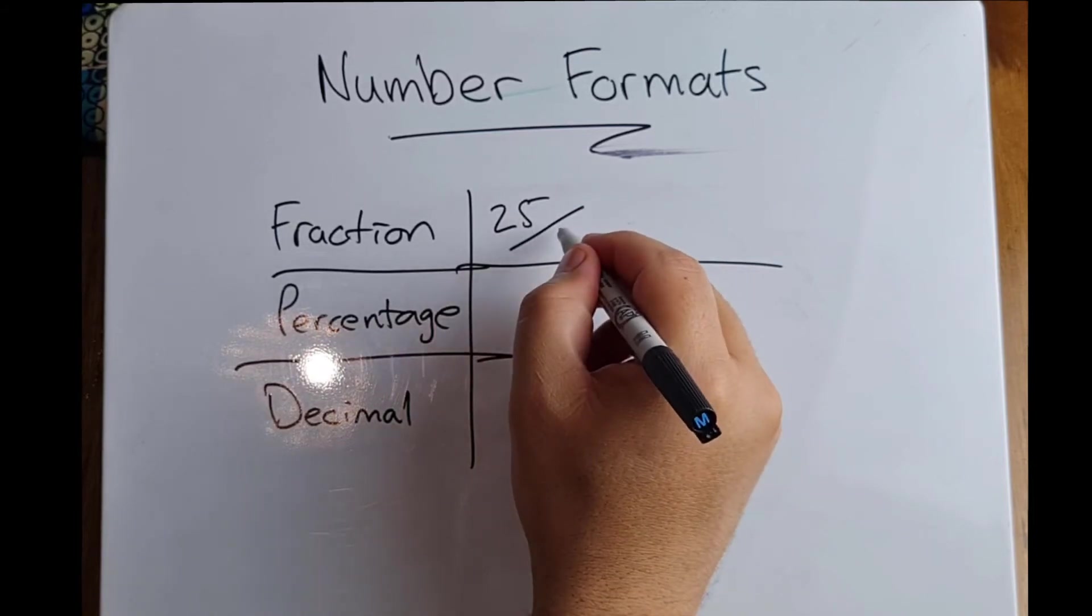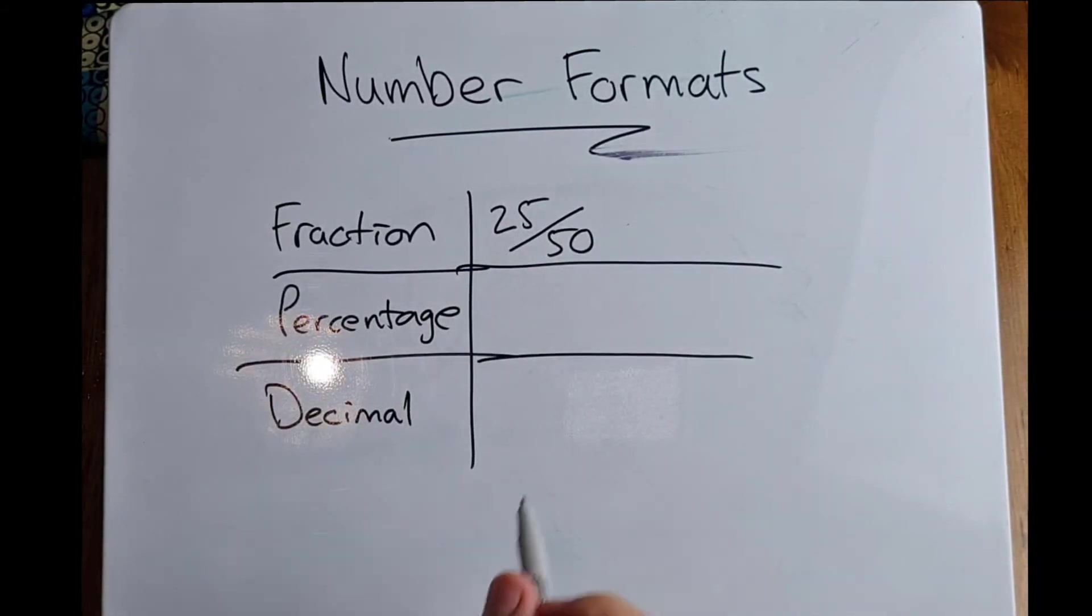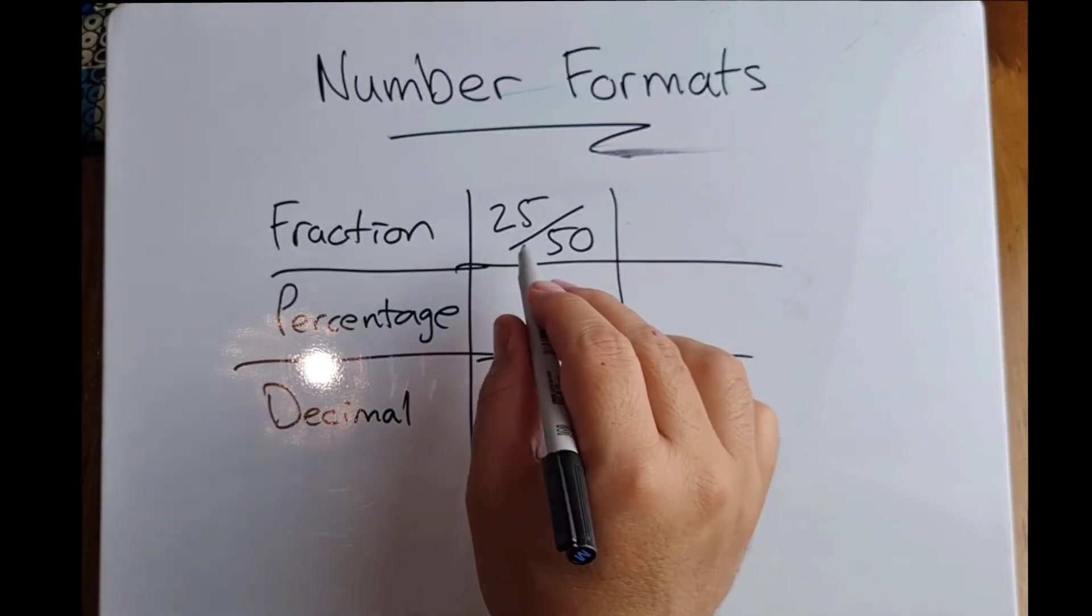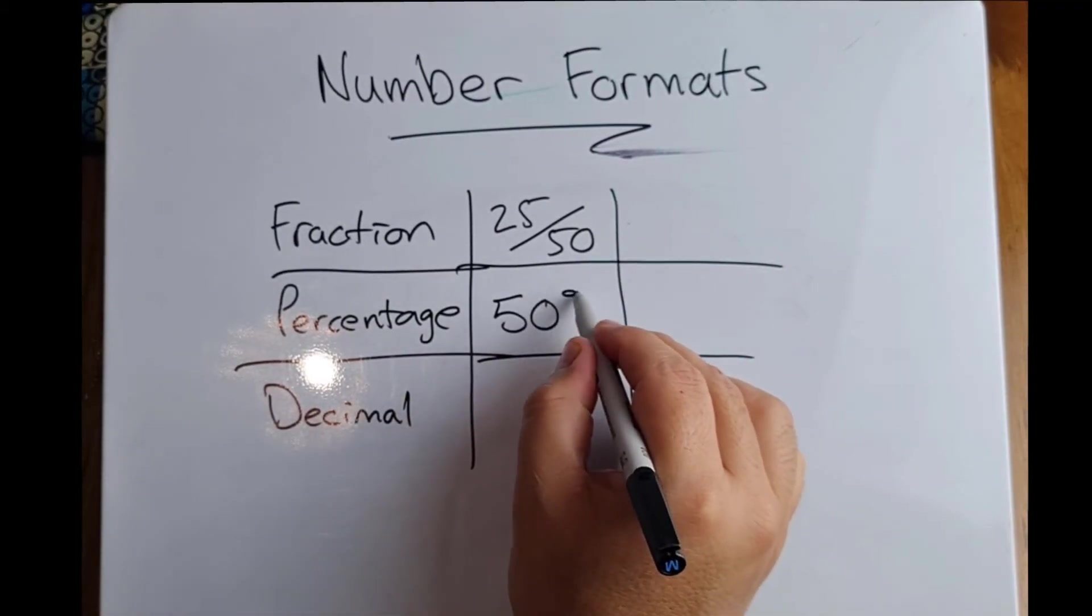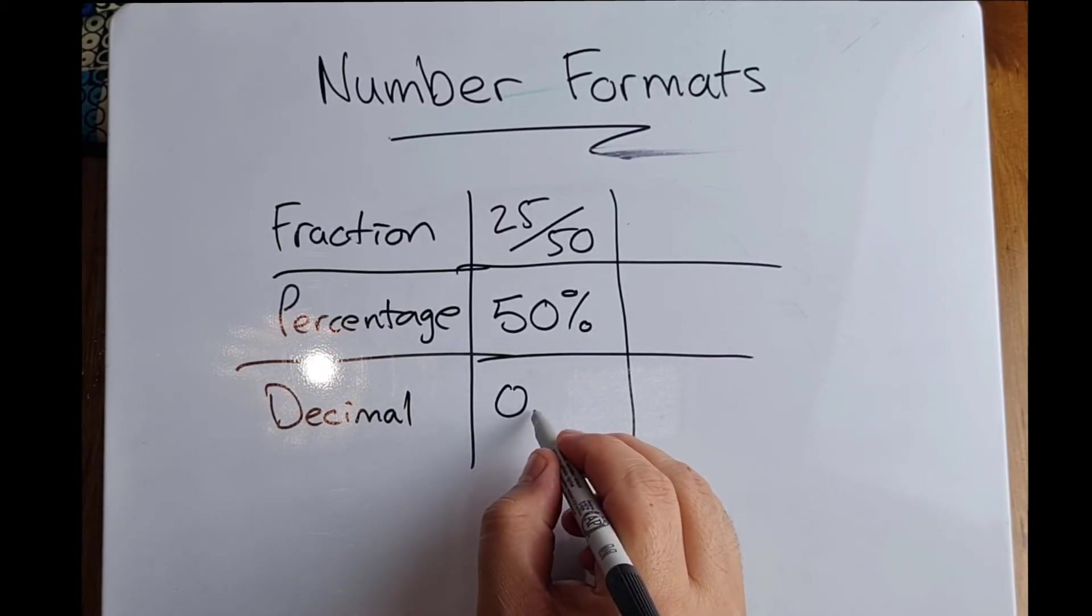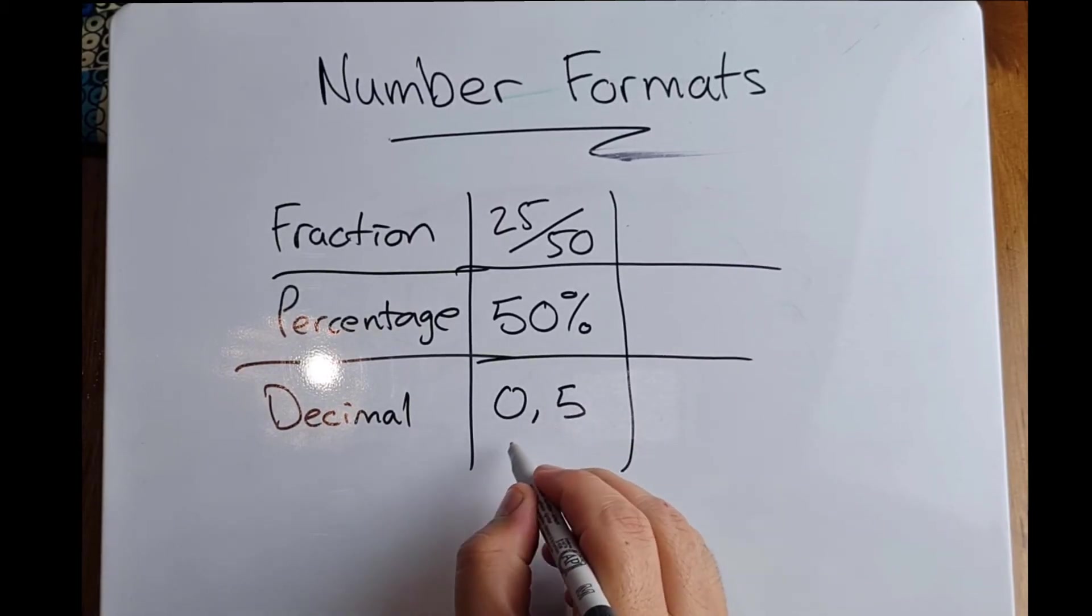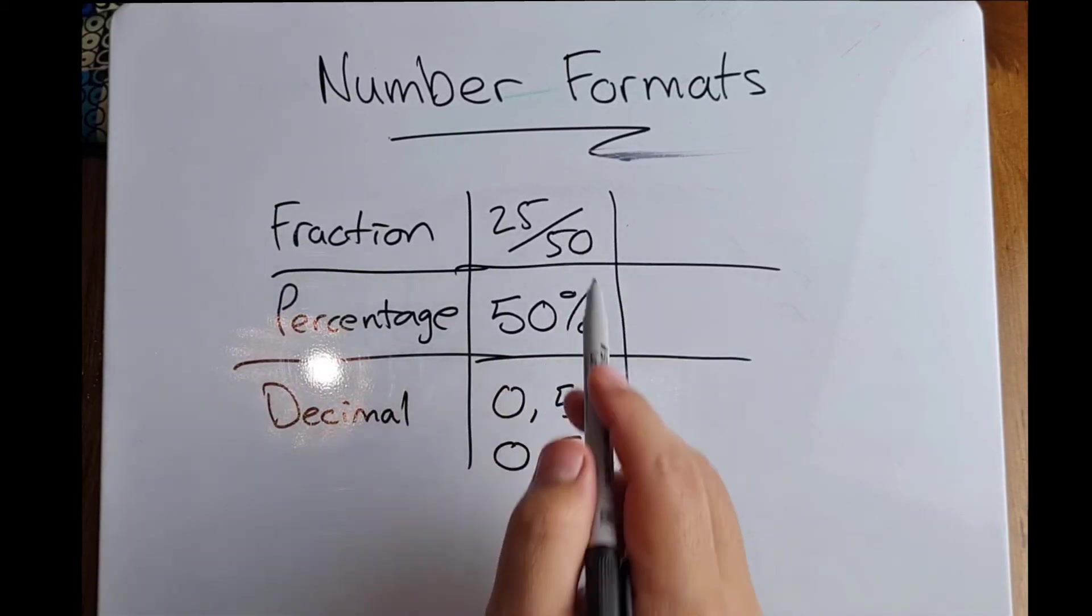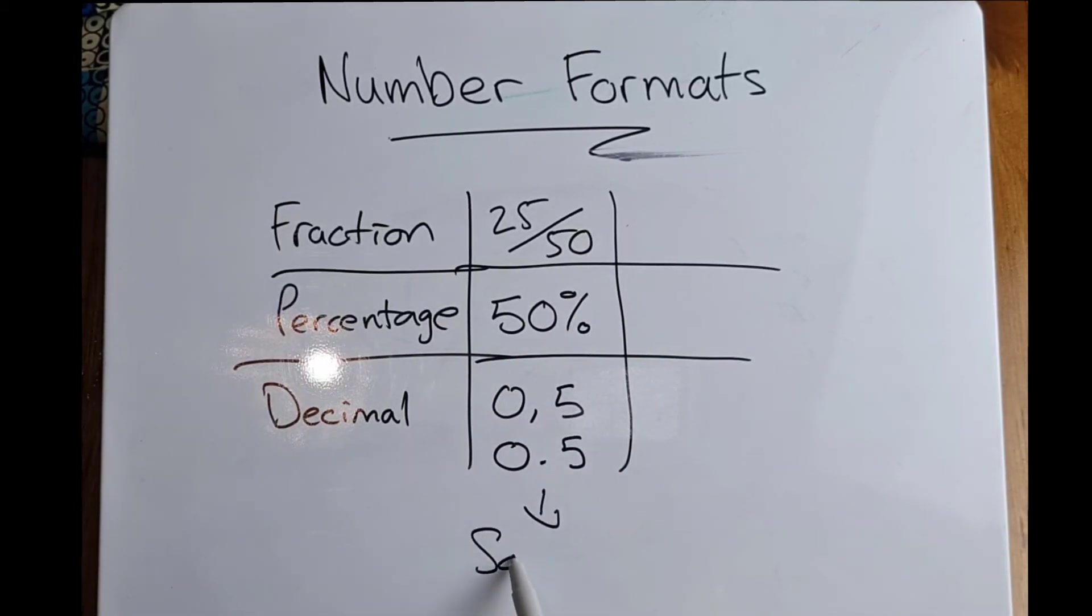Let's say 25 out of 50 as our fraction. As a percentage, this would be 50%. As a decimal, it would be 0.5. But all of these are exactly the same thing. It's the same number that has just been expressed in a different format.